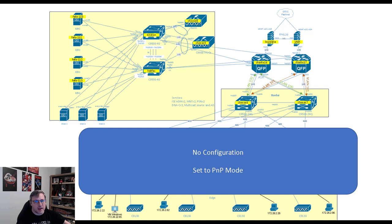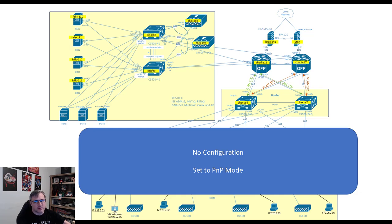If for some reason we had more layers — say there was another access layer off of CHEESE12 and 13 — what you would do is run LAN automation first on the two layers, then rerun it again closer, using a seed device that's further down the stack once those are pulled into DNA Center. So let's go ahead and run through it. Before we do, let me show you basically how it's going to work and what to expect.